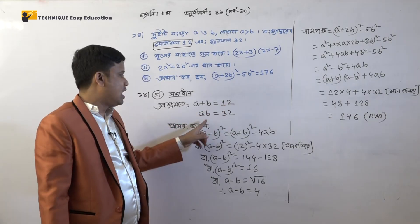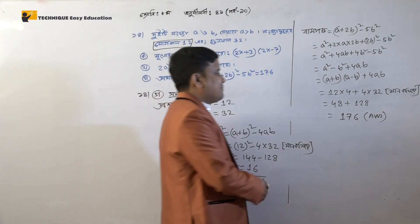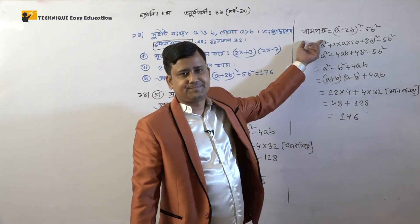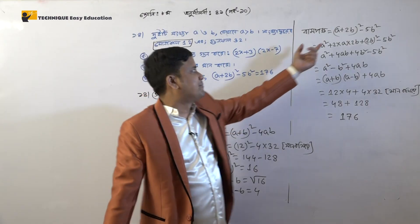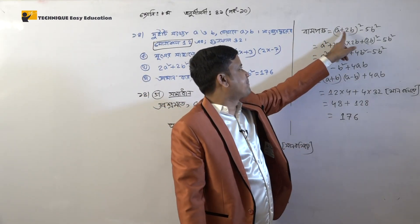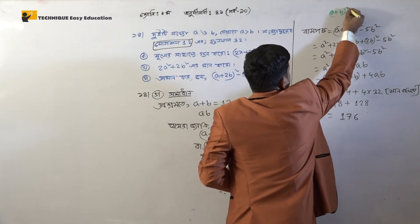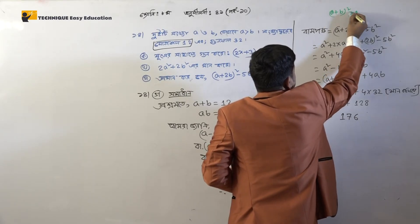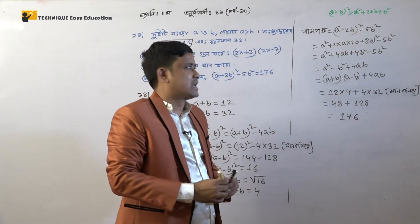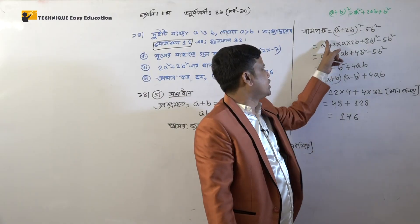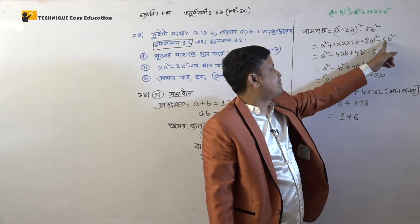a plus b equal to baro and ab equal to both thirish. a plus b equal to baro and ab equal to both thirish. So we put the value into our formula. a equal to aksosyaathar. Bumpo collect — a plus b holy square. The sutra: a plus b holy square equal to a squared plus 2ab plus b squared.